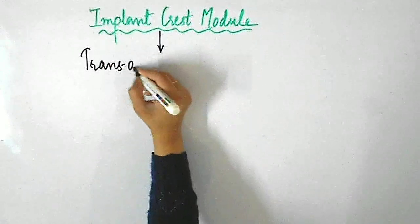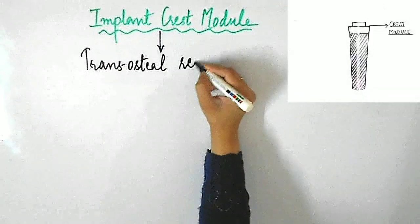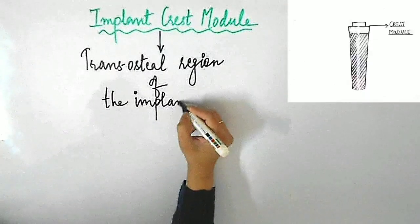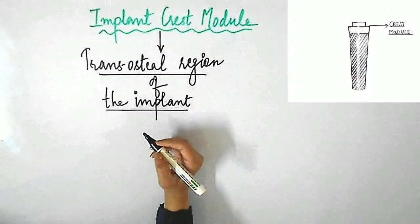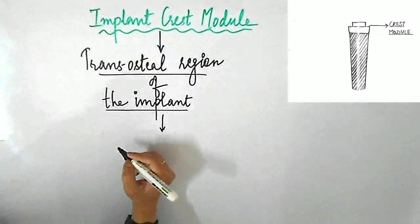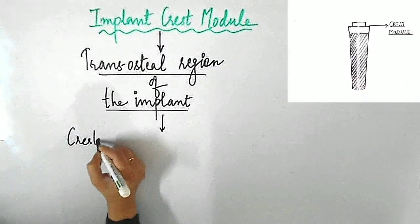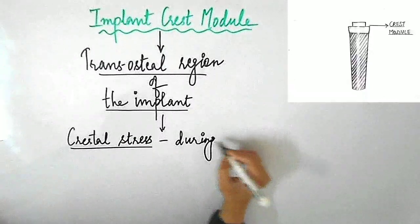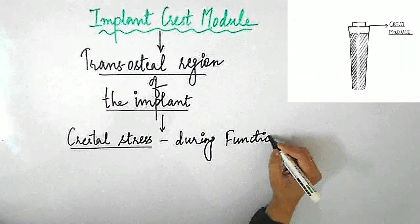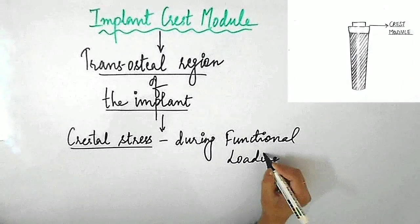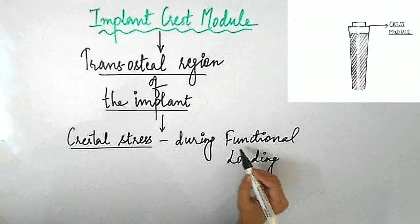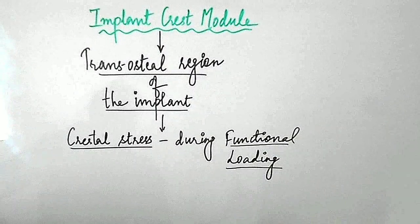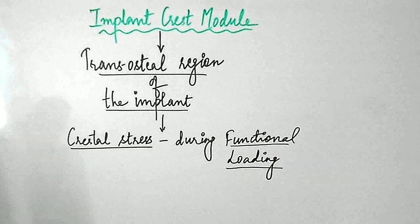The next factor influencing crestal bone loss is implant crest module. I've already explained about implant crest module in detail in one of my previous videos — link will be provided in the description box below. Briefly, the crest module of the implant is the transossal region of the implant which receives the abutment and receives the crestal stresses during functional load.